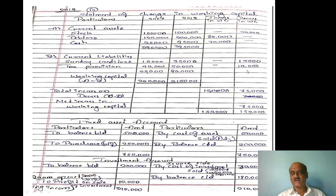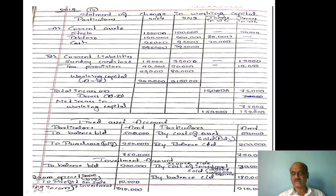Total decrease is 50,000 plus 15,000 plus 10,000 equals 75,000 total decrease. Net increase is 1,50,000 less 75,000, so net increase in working capital is 75,000.